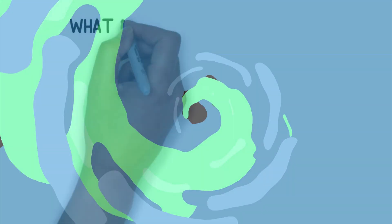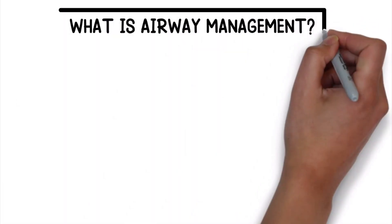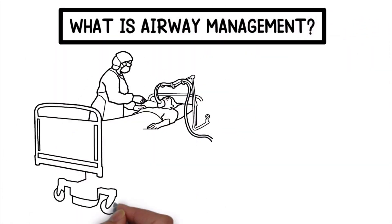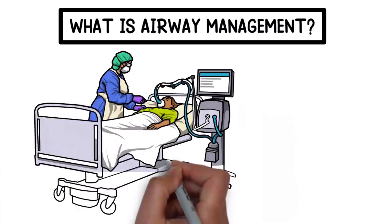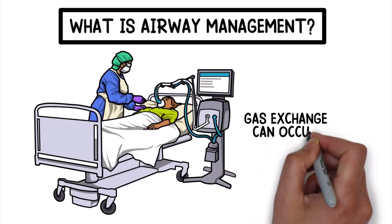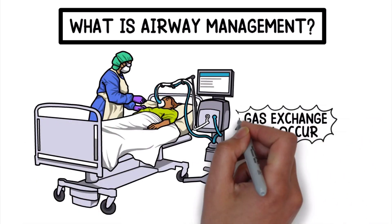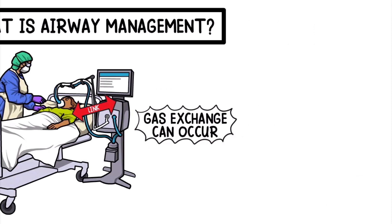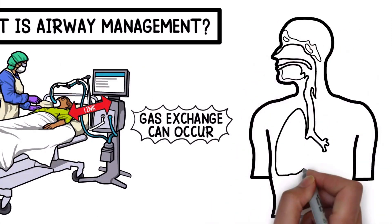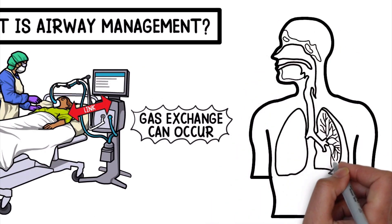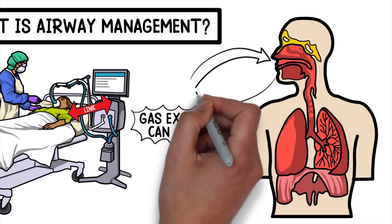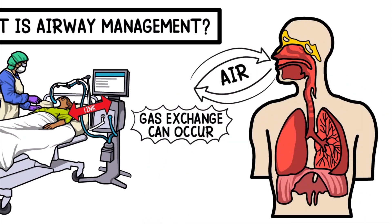What is airway management? Basically, it's the process of maintaining ventilation in a patient by using an artificial airway. This ensures that gas exchange can occur by establishing a link between the patient and the ventilator. This is important because we need to make sure that the patient's upper airway is free and clear of foreign substances so that air can flow into and out of the lungs.